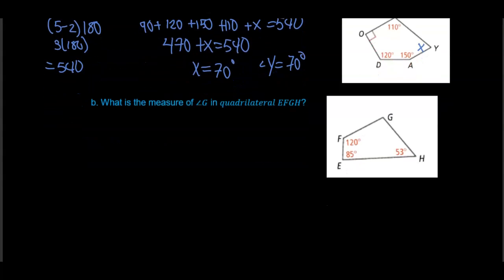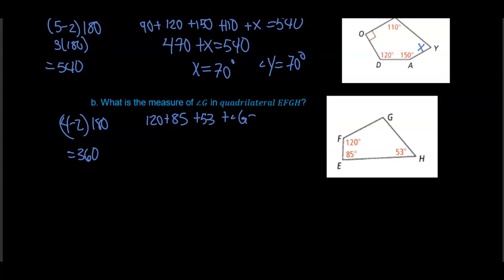And here we have a quadrilateral. Quadrilaterals use (4 minus 2) times 180, which gives us 360. So 120 plus 85 plus 53 plus angle g equals 360. 120 plus 85 plus 53 is 258, so 258 plus angle g equals 360. Subtracting gives angle g equals 102 degrees.